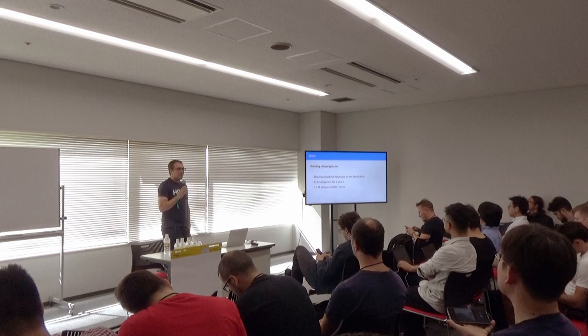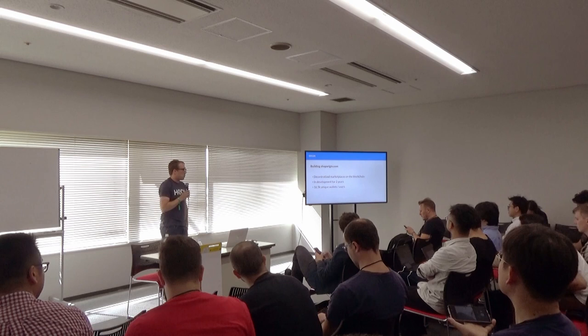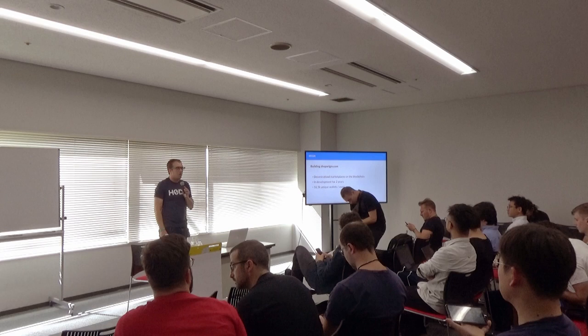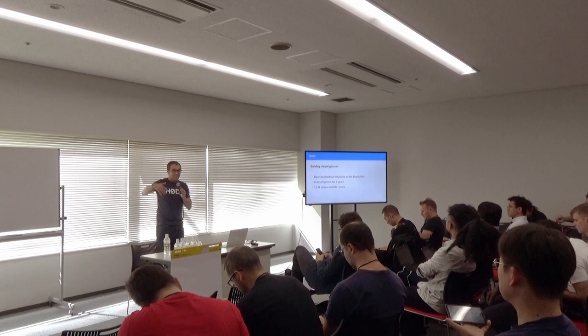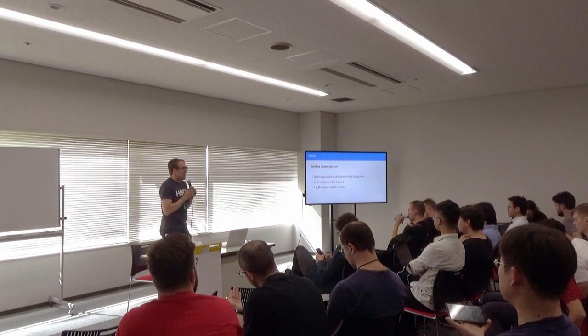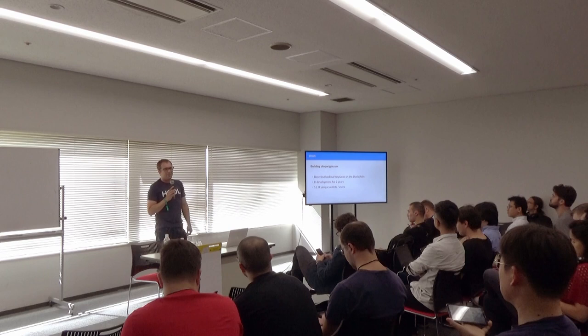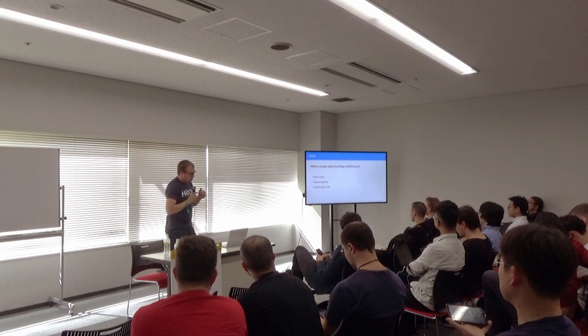For those of you who are not familiar, Origin is a decentralized marketplace on the blockchain for enabling peer-to-peer commerce without any middlemen or intermediaries. We've been working on it for about two years now. Our team includes people like one of the founders of PayPal, the first engineer from YouTube, a bunch of engineering managers from Google and Dropbox. As of today, we have 16,000 unique wallets using the marketplace.